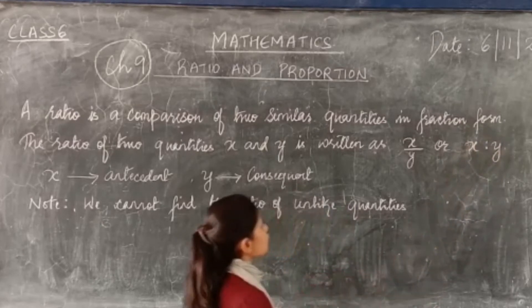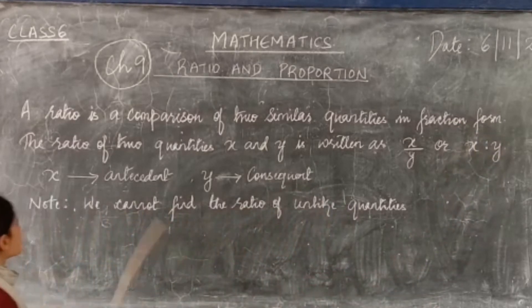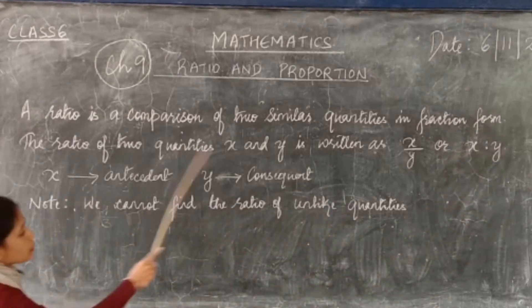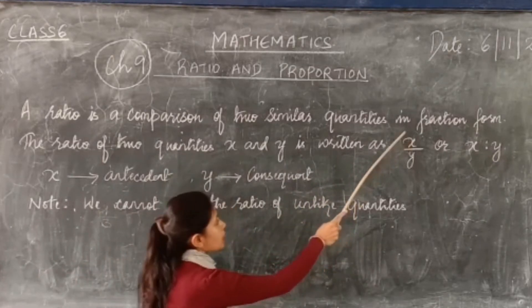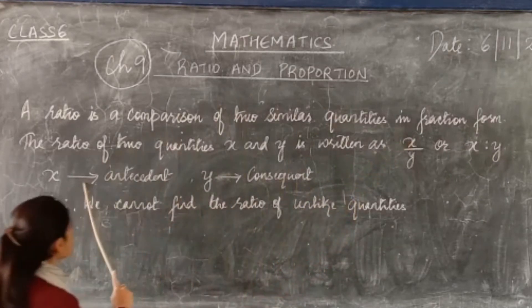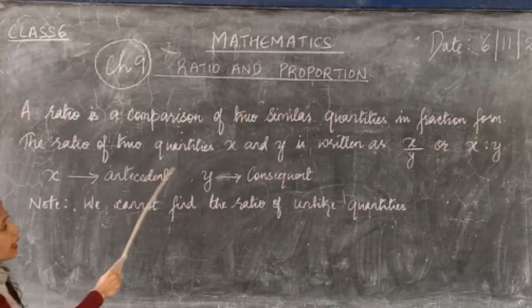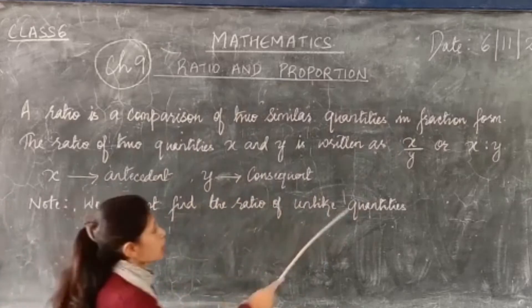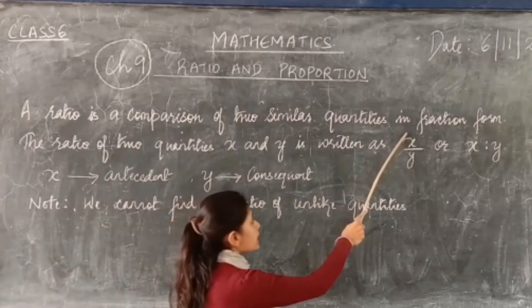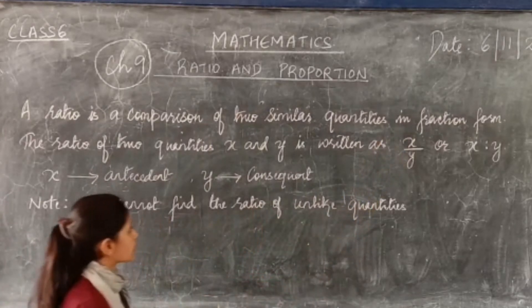This is the ratio of two similar quantities. Here, x is called the antecedent and y is called the consequent.